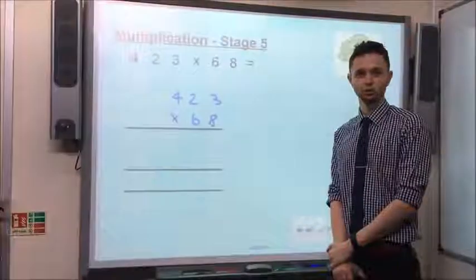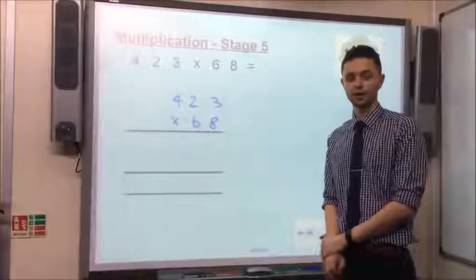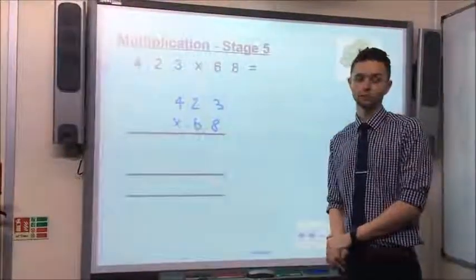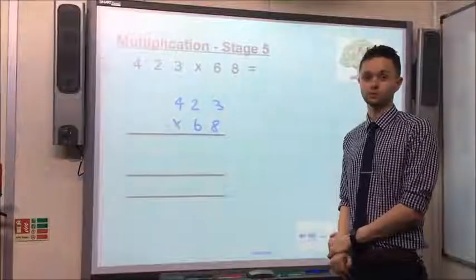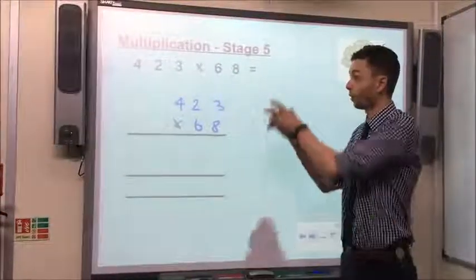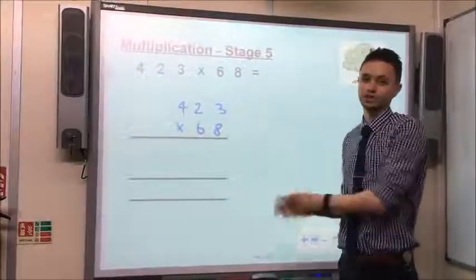Hello everyone, welcome to multiplication stage 5. This stage introduces long multiplication, which is a method we use when we are multiplying two numbers that will both have more than one digit.